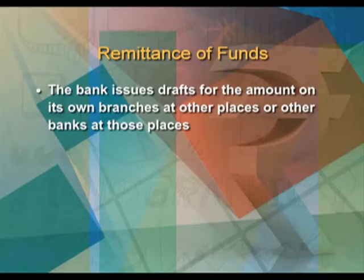Another salient feature of commercial banks is providing the facility of fund transfer from one place to another on account of the interconnectivity of branches. The transfer of funds is administered by using bank drafts, pay orders, and mail transfers on nominal charges. The bank issues drafts for the amount on its own branches, and the payee can present the draft at the drawee bank at their place and collect the amount.